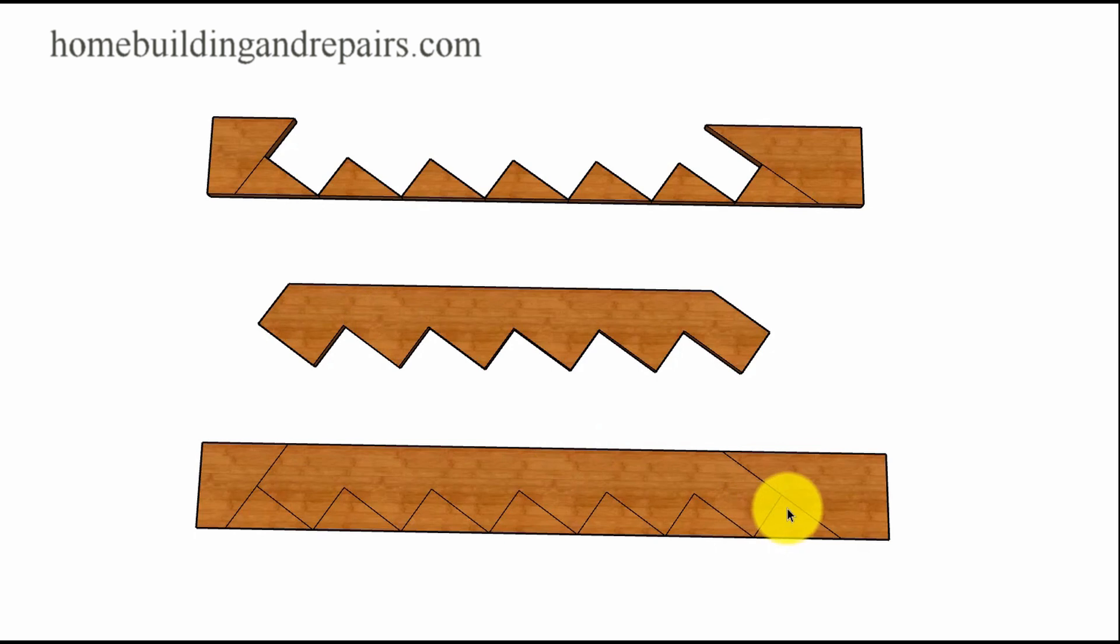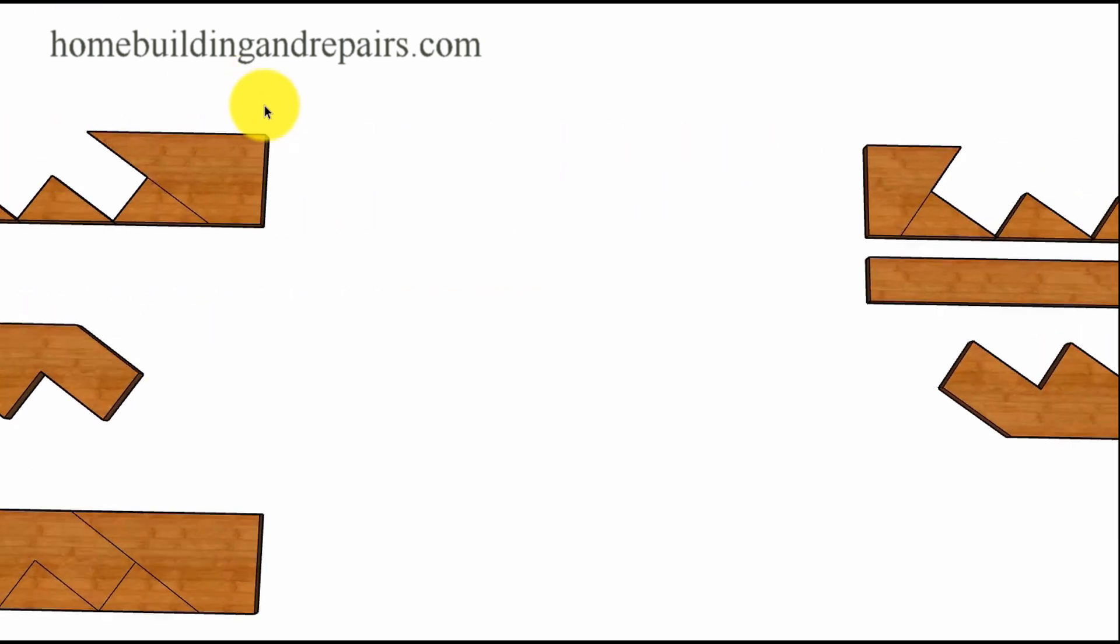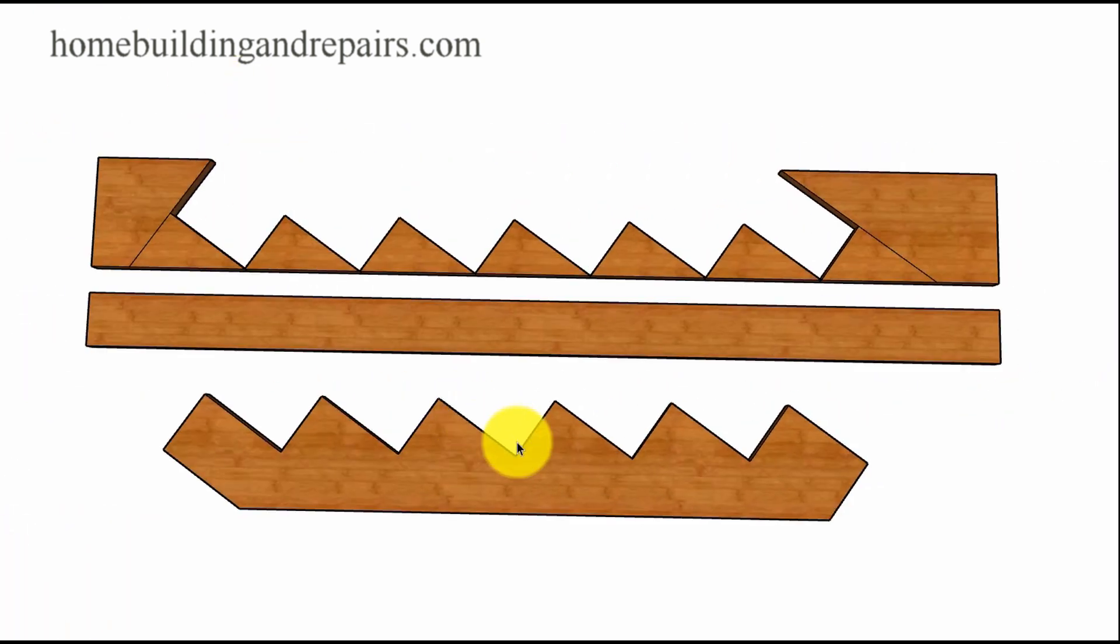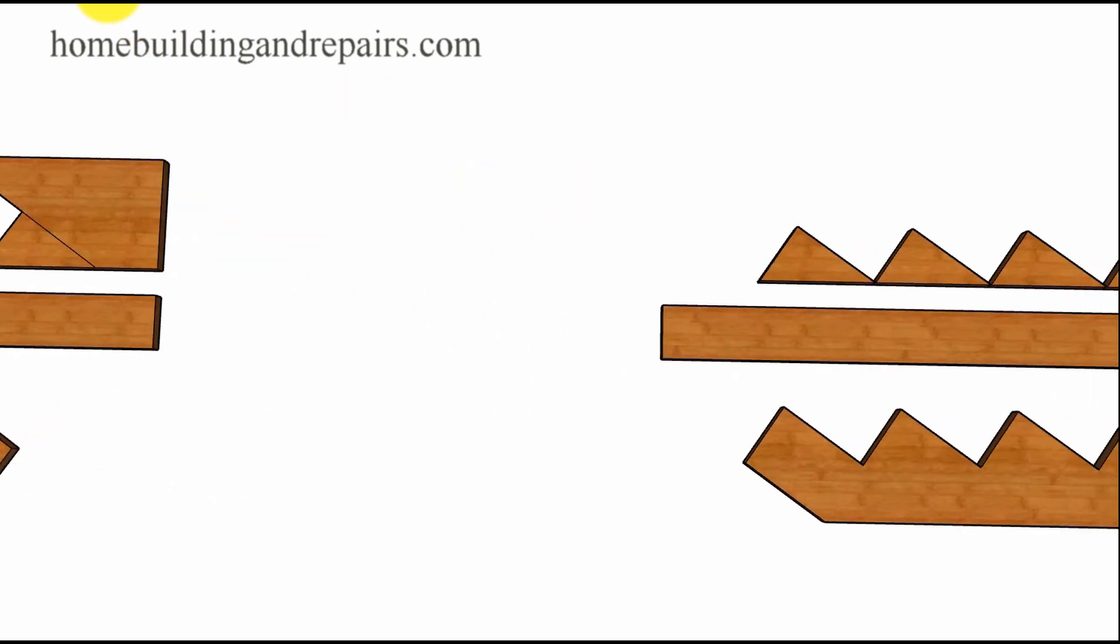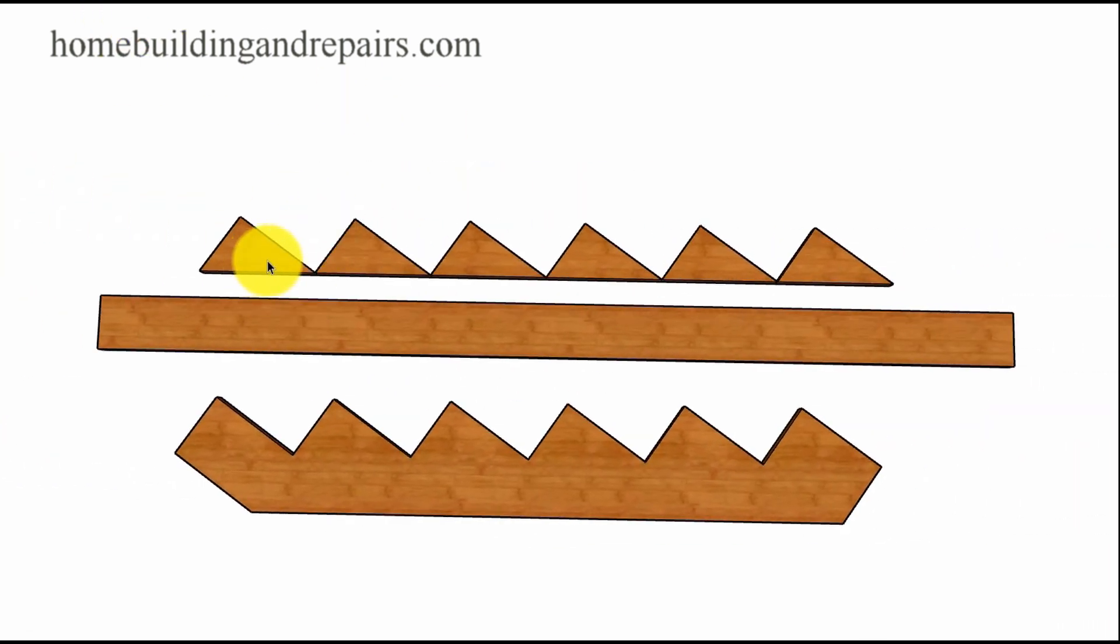So what we would be doing would be laying out a stair stringer and then cutting out the little triangles. And then we would end up with something like this. And I'm going to go ahead and flip the stringer around and flip this around here so that it lines up with this. Now what if we used a 2x6 and our little triangles.